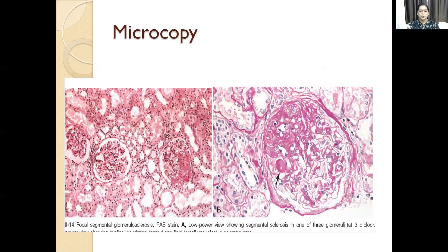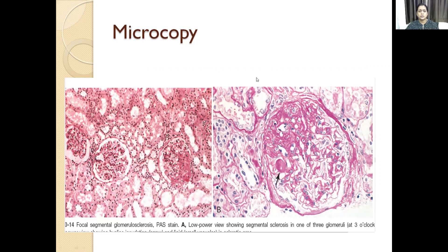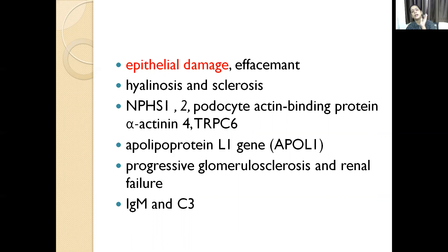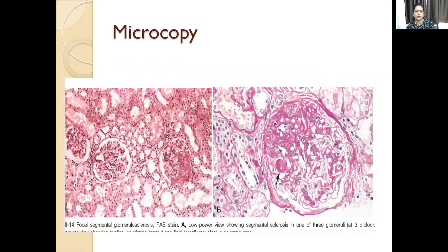In light microscopy, we are seeing focal segmental hyalinosis and sclerosis. In electron microscopy of focal segmental glomerulosclerosis, we see effacement of the foot processes — exactly like that of minimal change disease — and there can be vacuolation associated with the visceral epithelial cells. In immunofluorescence, we see IgM and C3 deposits. In membranous nephropathy, we see IgG and C3 deposits in granular form.